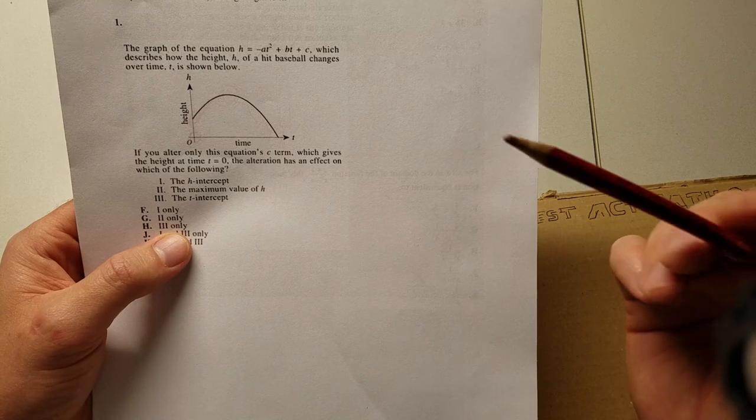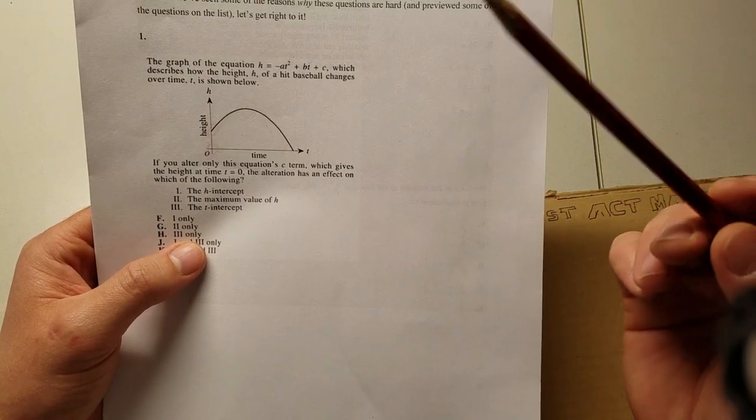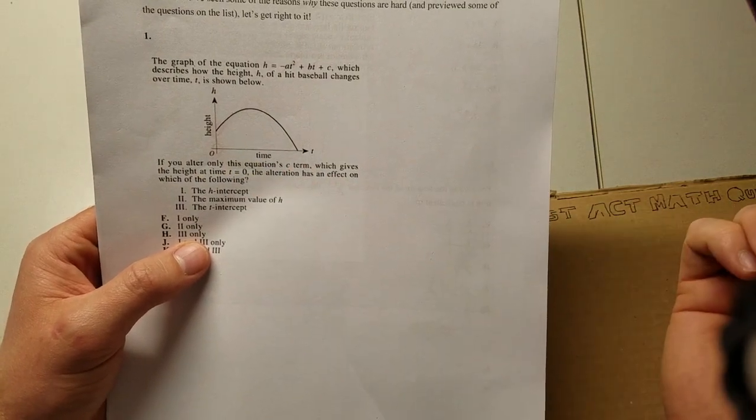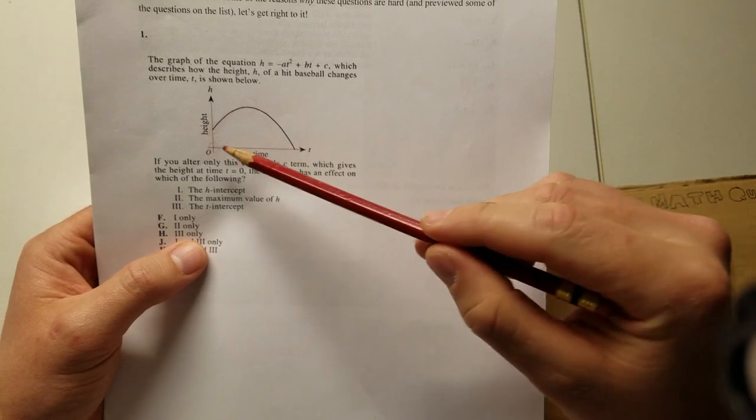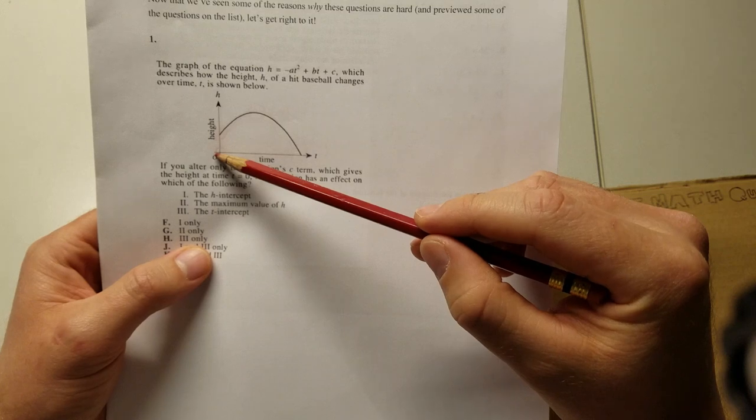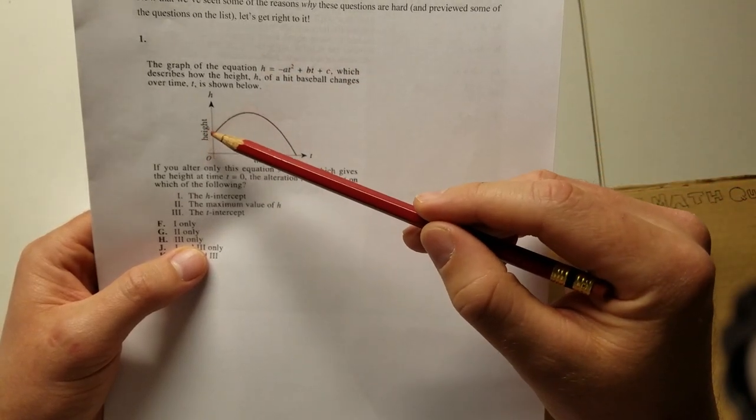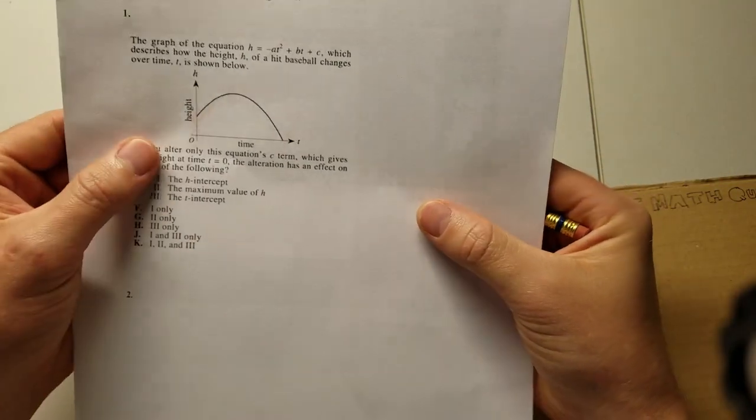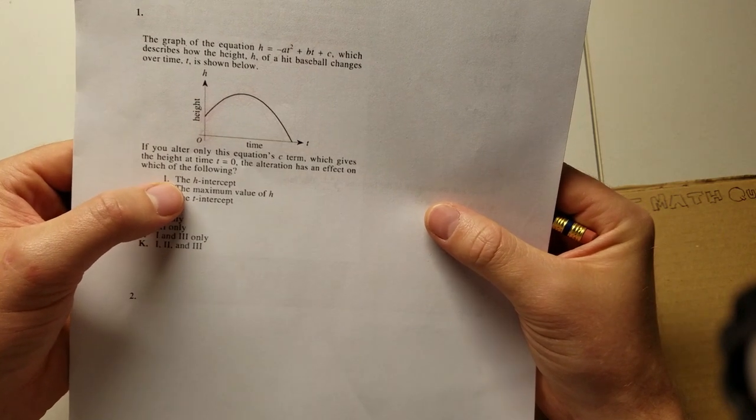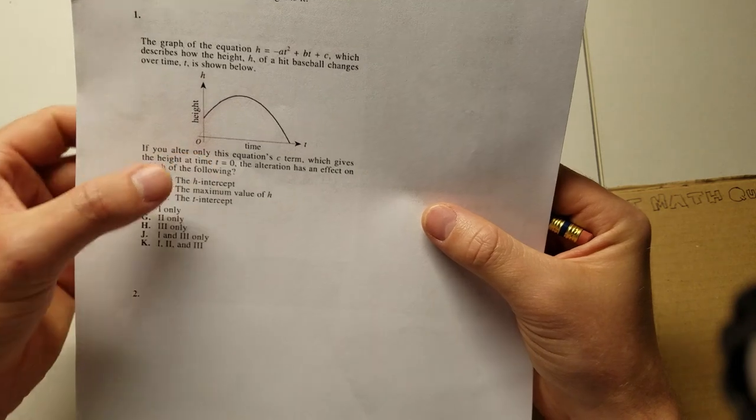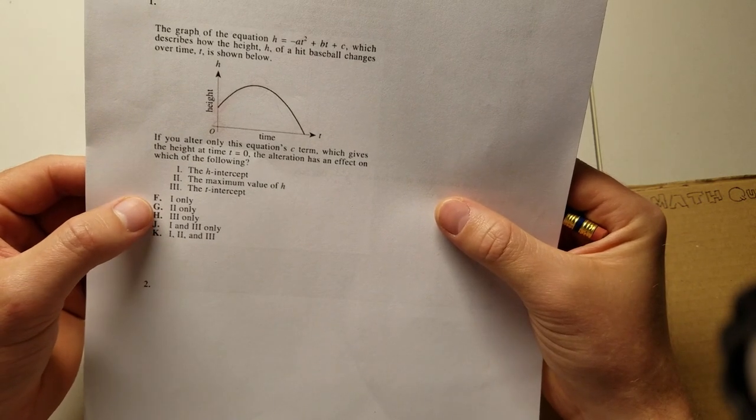So I'll go through these one at a time. D-H intercept. And for this one, all you really need to know is that H intercept is, in fact, the height at time equals zero. So it kind of gives you that one. And that just means that when T over here is zero, what height are you starting at? So our answer would be it does, in fact, have an effect on the H intercept when we alter the C term. So it is number one, so we can eliminate G and H right off the bat.